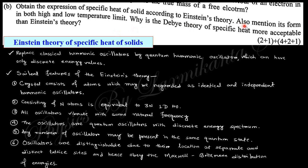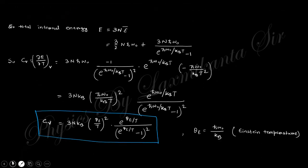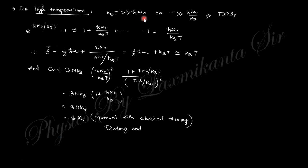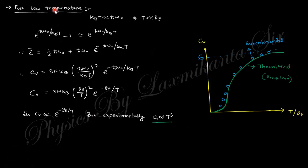They also mentioned in the form of both high and lower temperature. Why is Debye theory of specific heat more acceptable than Einstein theory? In case of high temperature, cv is greater than, so T is very much greater than theta. Taking this approximation, you will obtain 3R. In case of low temperature, take this approximation and you will obtain this expression.